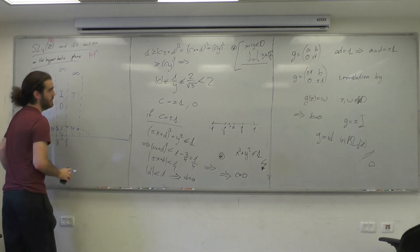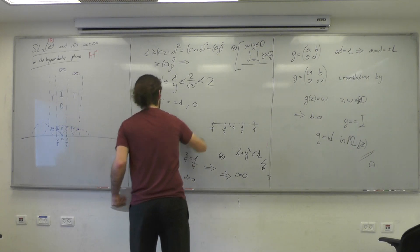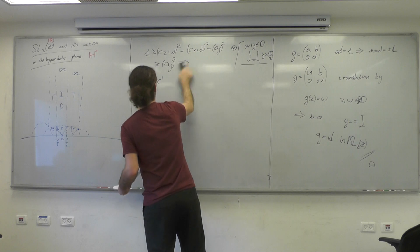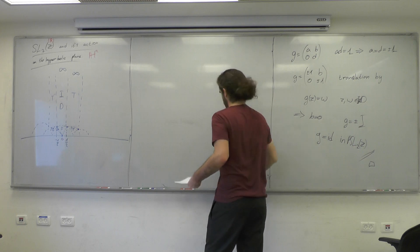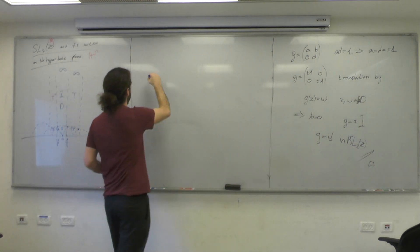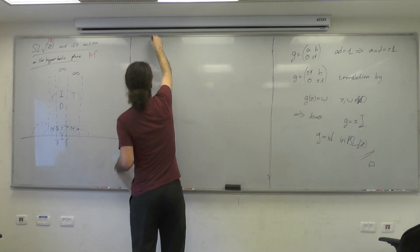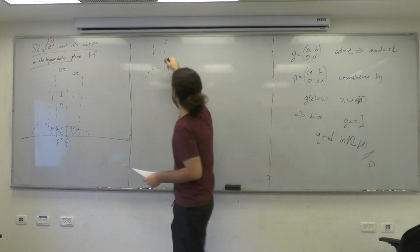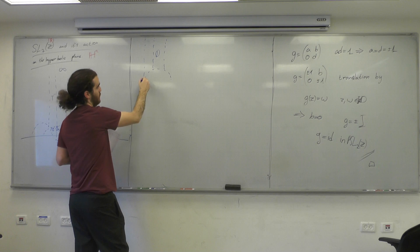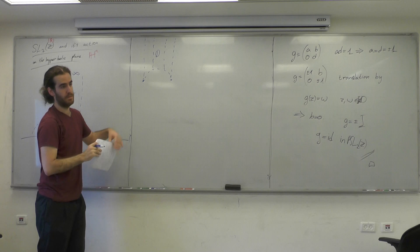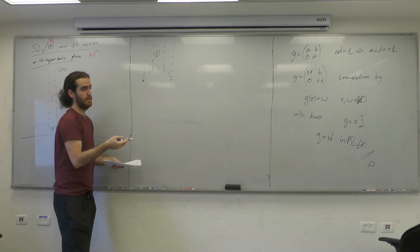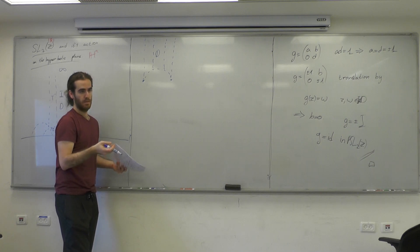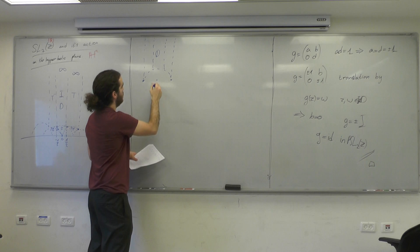D has additional properties — for example, it has finite volume. D is a subset of an ideal triangle with vertices at −1/2, 1/2, and infinity. The area formula for a triangle in hyperbolic space is π minus the sum of the angles, all of which are zero here, so it's a subset of a set with area π.